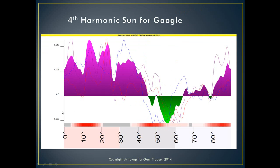I'm able to do this using software called Timing Solution — I highly recommend it if you want to do thorough analysis. It saves a lot of time. What I've done here is generated a chart for the fourth harmonic of the sun for Google. I've asked it to replicate my 90-degree dial, because I'm a cosmo-biologist. The fourth harmonic means when we divide 360 by 4, it's actually 90 degrees.